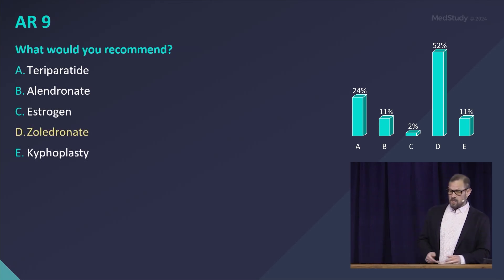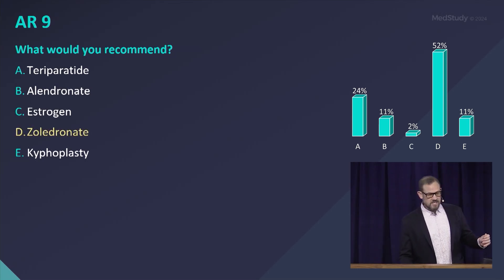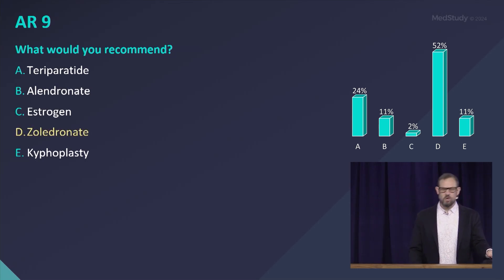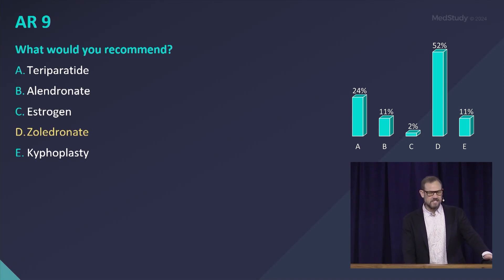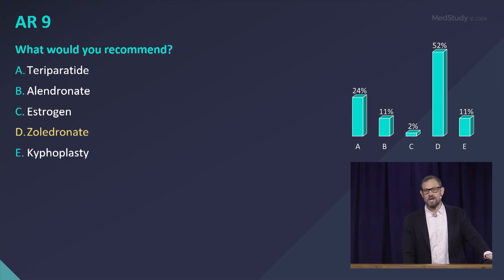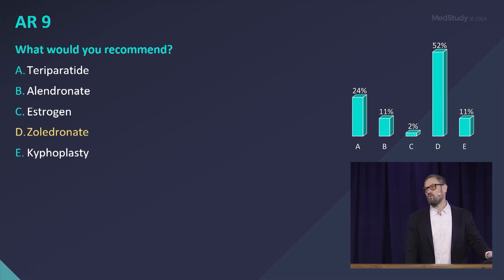The correct answer here is to have the patient go on zoledronate, or zoledronic acid. They get a one-time infusion every year to year and a half. The preferred treatment in someone with osteoporosis is bisphosphonates.